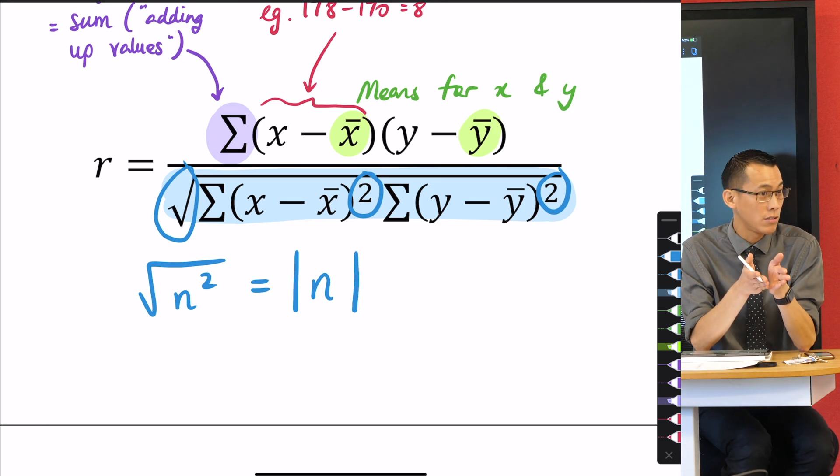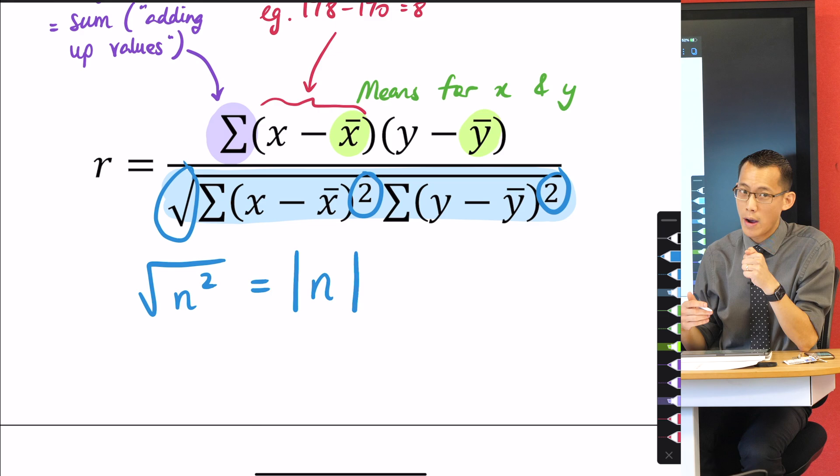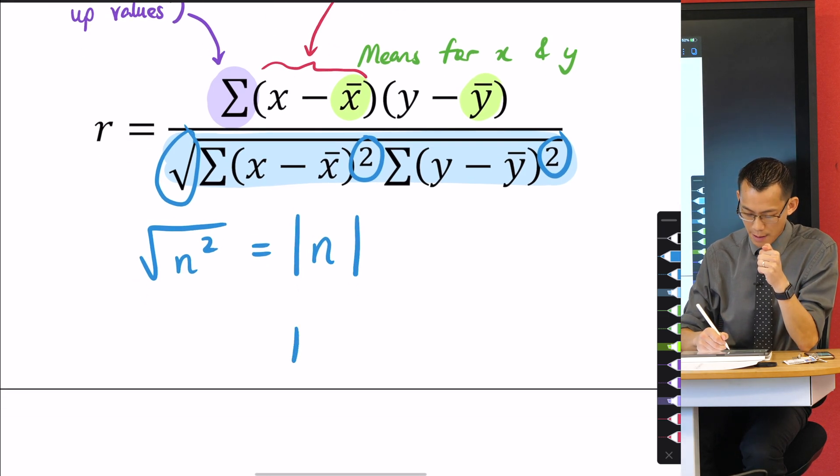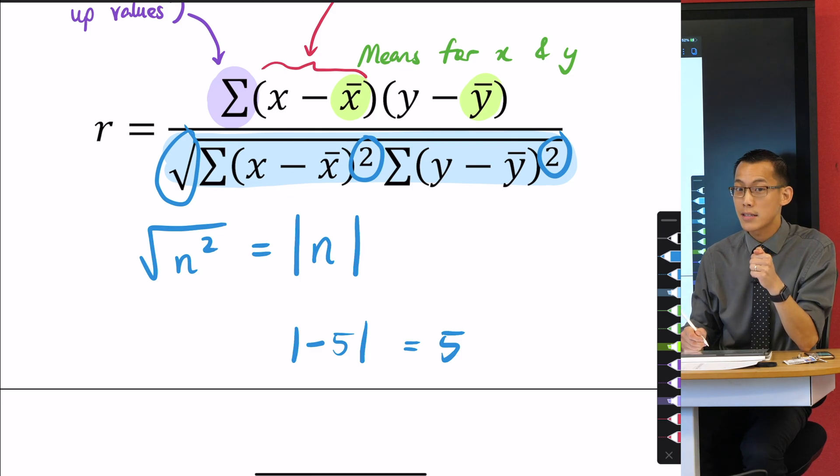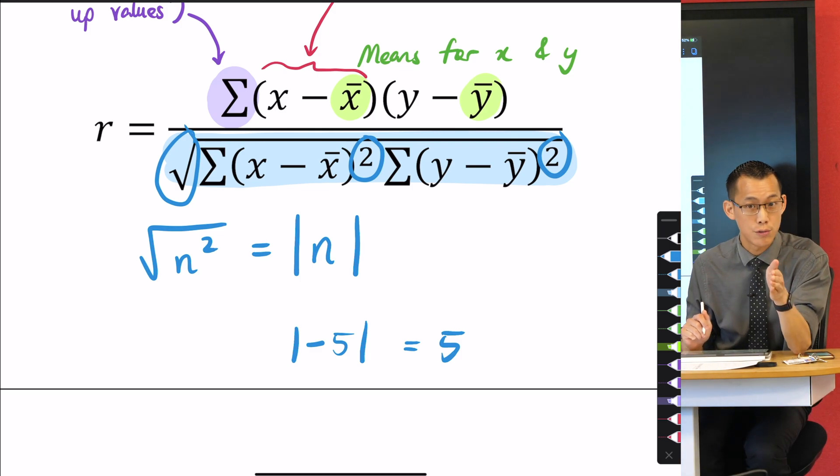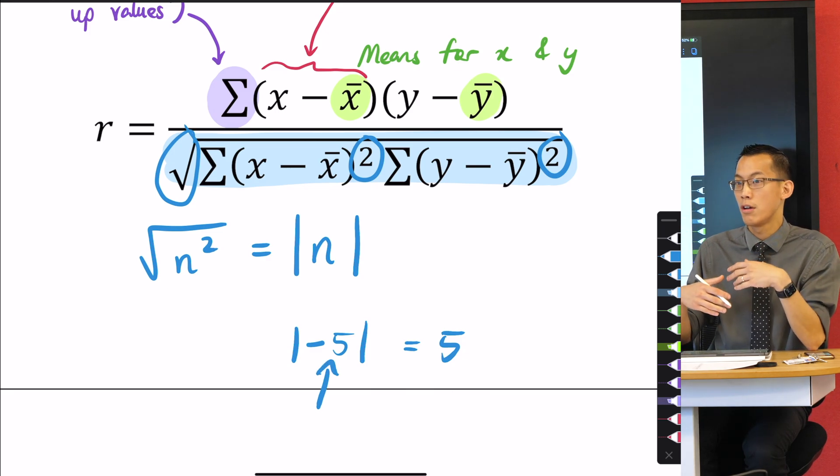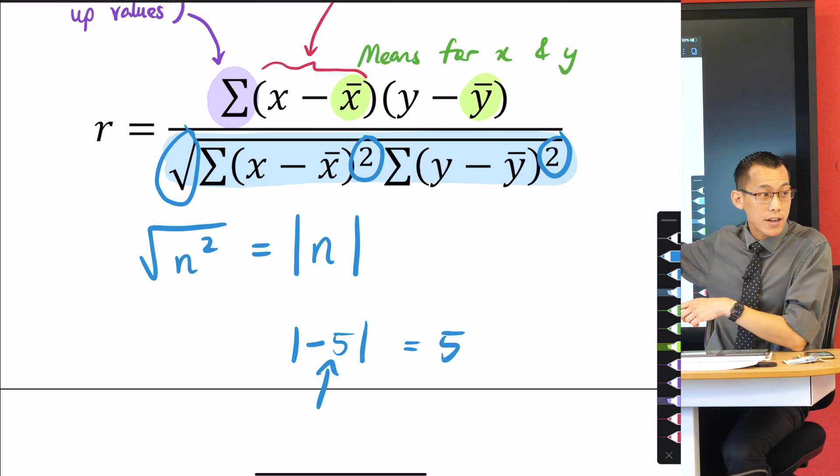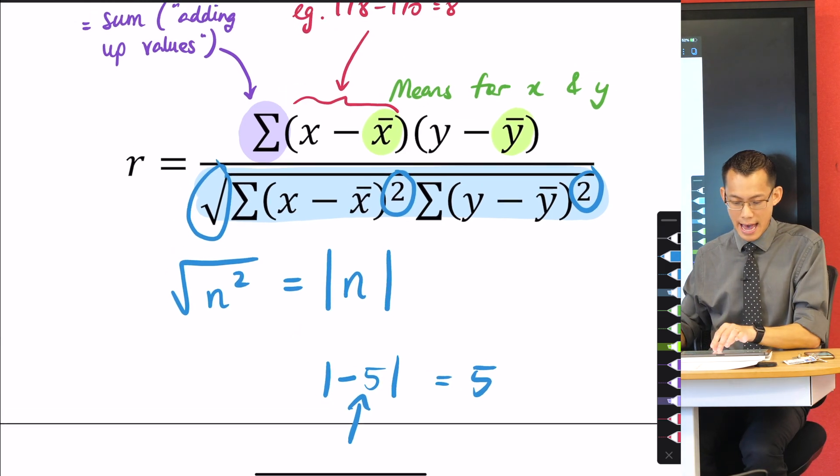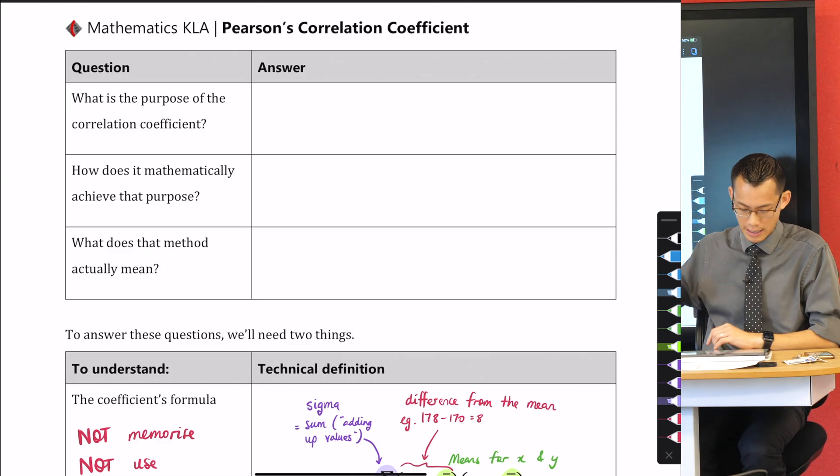Now, essentially what the absolute value is telling you is not whether you are up or down, it's telling you how far away you are. If I said to you the absolute value of negative 5, which we just said before is 5, what that means is how far are you from the origin? I don't care which direction you are, whether you're up or down. I just want to know how far you are. Now why do we divide by this? I'm trying to answer these questions up here.